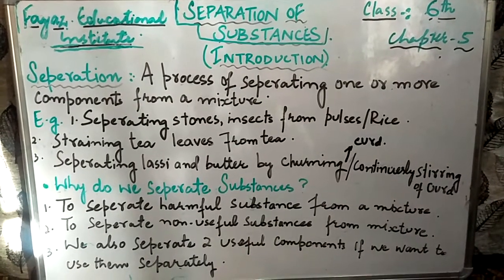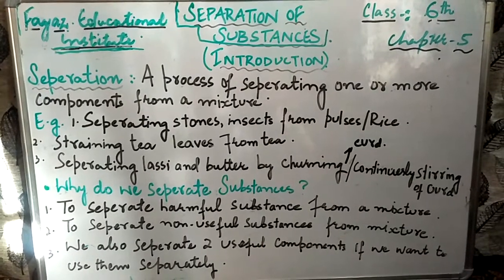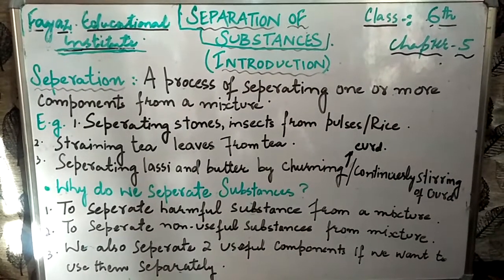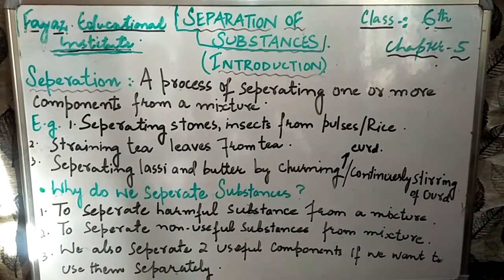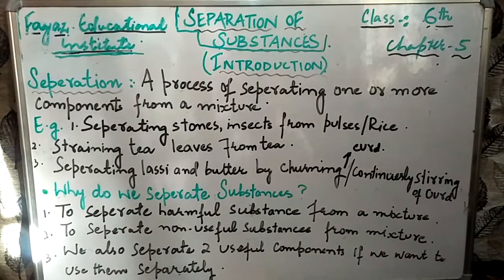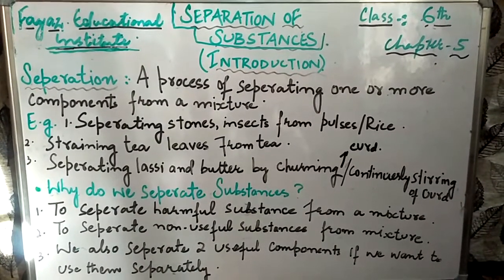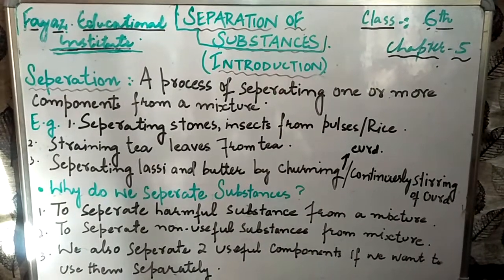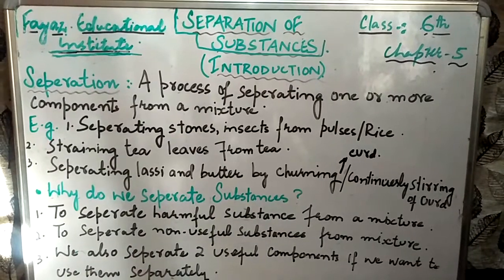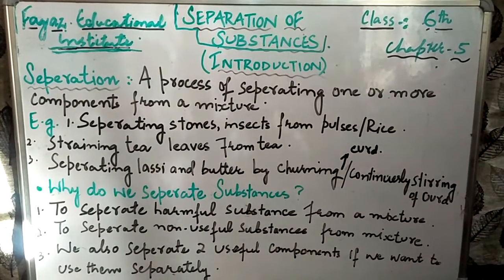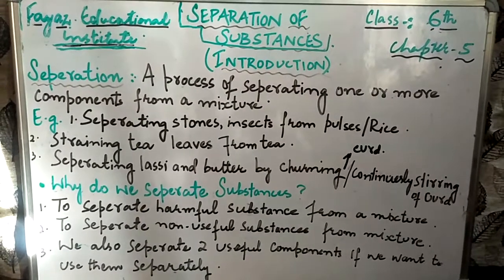What is a mixture? For example, when we make lemon water, what do we need? Lemon, sugar, and water. When we prepare lemon water, a mixture is made — it is made from lemon, sugar, and water combined together.